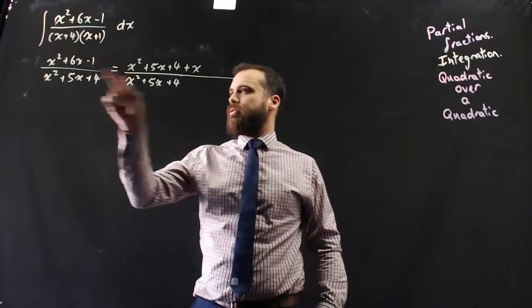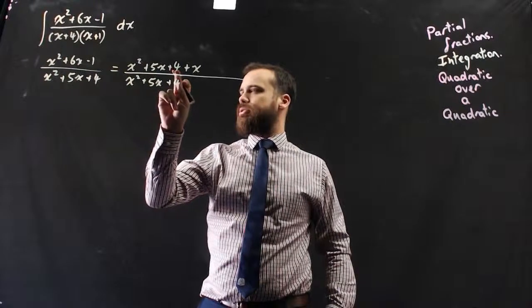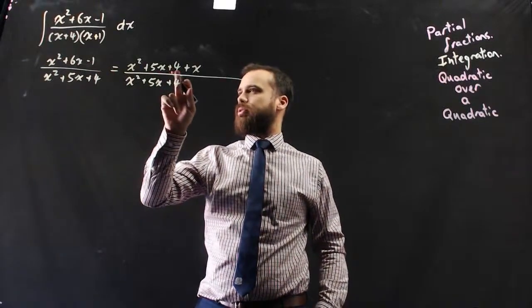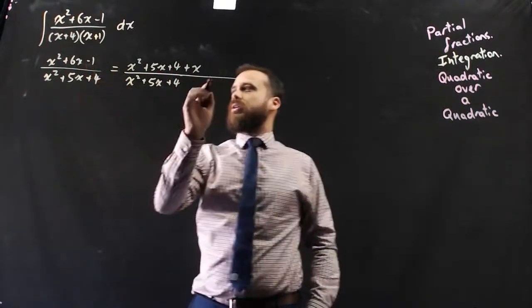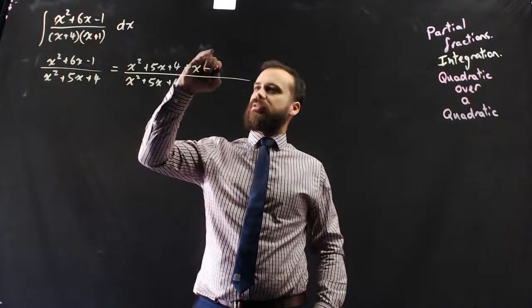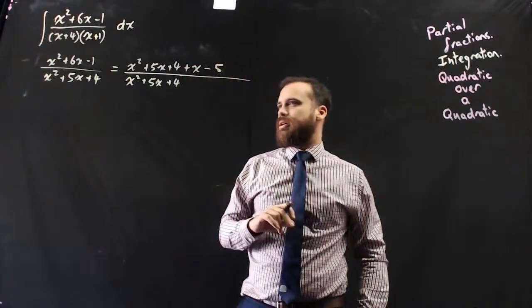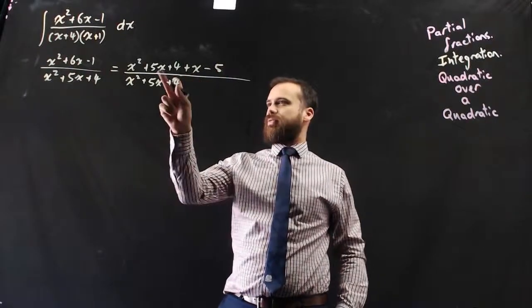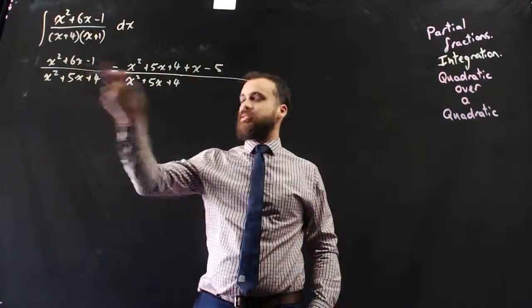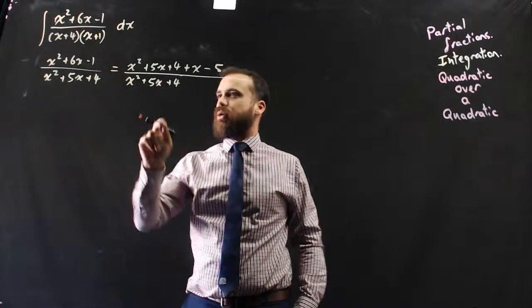And negative 1, positive 4. To turn positive 4 into negative 1, I'd need to subtract 5. So if we grouped our terms now, 5x plus x will be 6x, and 4 minus 5 will be negative 1. So this is identical to this.